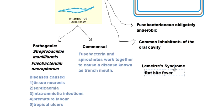As the name suggests, rat bite fever spreads through the bite of rats. Streptobacillus moniliformis is found in the oral cavity of rats and rodents, so when a rodent bites a human, the bacteria enter the body and can cause this fever.